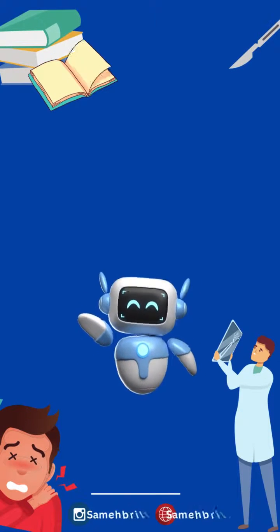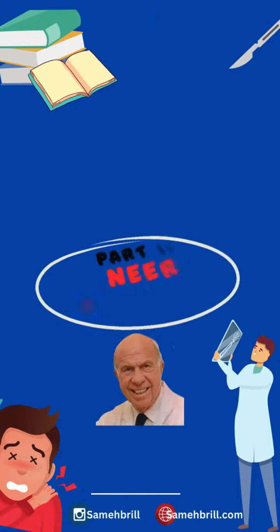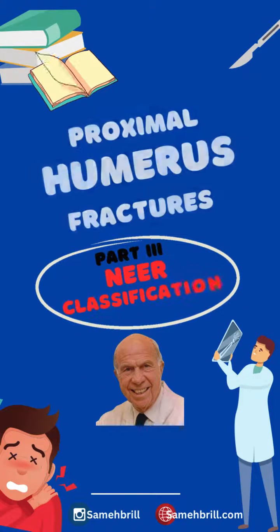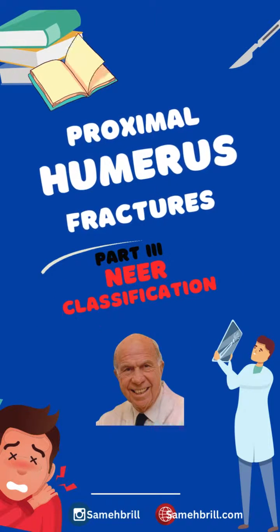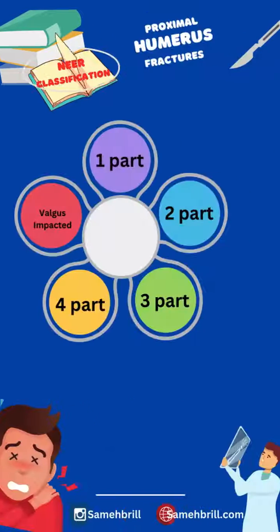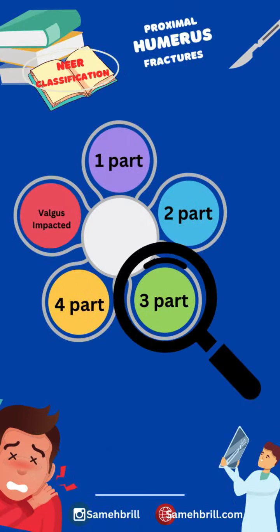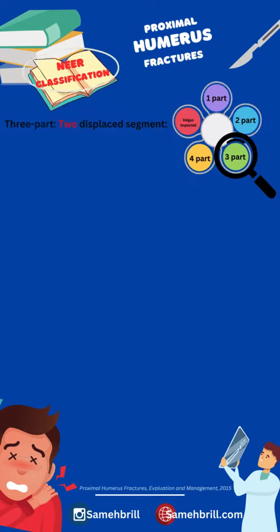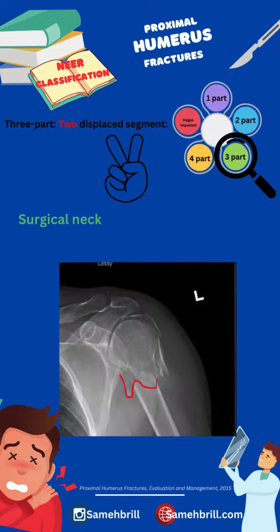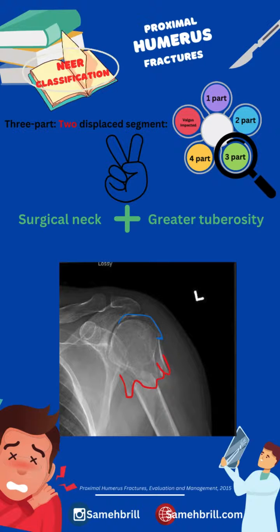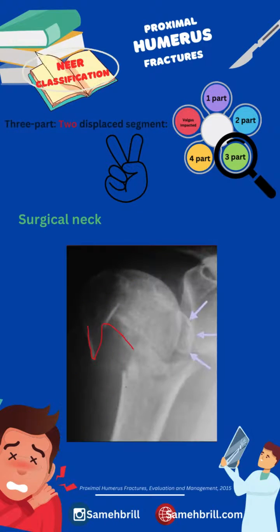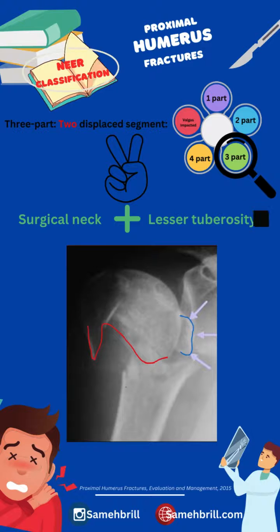Welcome back to the final part of Neer classification of proximal humeral fractures. Let's start with three-part fractures. They can be of two variants: surgical neck accompanied by greater tuberosity fracture, which is more common, and surgical neck with lesser tuberosity fracture.